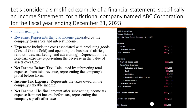In this example, revenue represents the total income generated by the company from sales and interest income. The costs associated with producing goods — cost of goods sold — and operating the business include salaries, rent, utilities, marketing, and advertising. Depreciation is a non-cash expense representing the decrease in the value of assets over time.